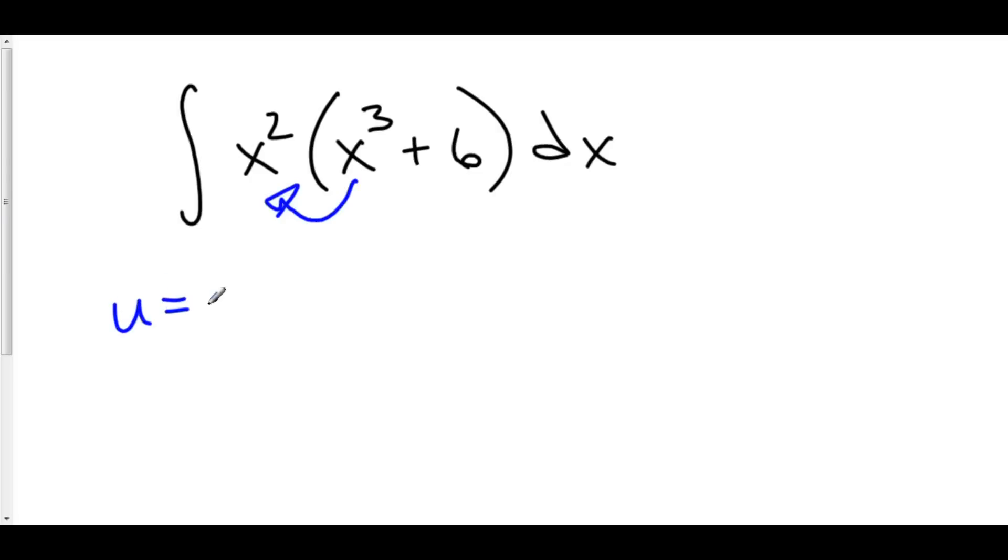Let's let u equal x cubed. I'm also going to include the 6 in my u because the derivative of 6 is 0. I don't want to have just a u plus 6 in here. That might be kind of awkward. So, we'll make it as easy as possible. We'll call u x cubed plus 6, this whole thing.